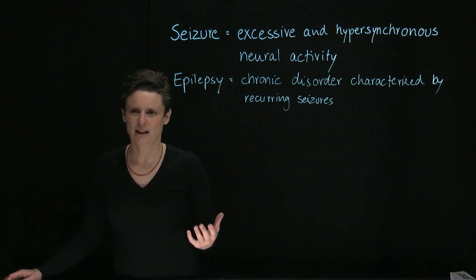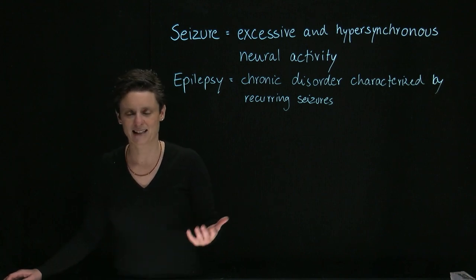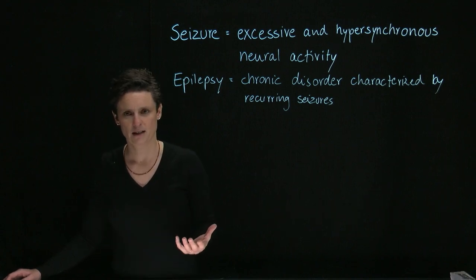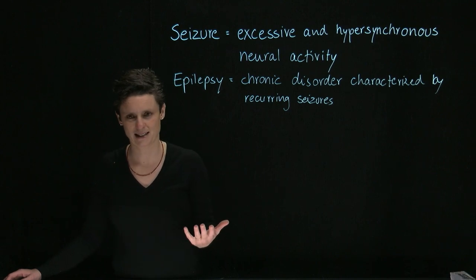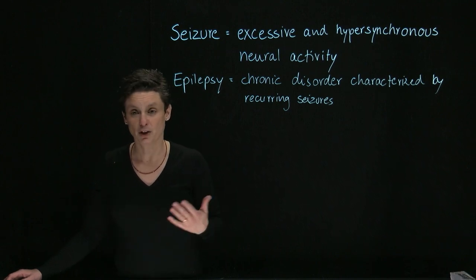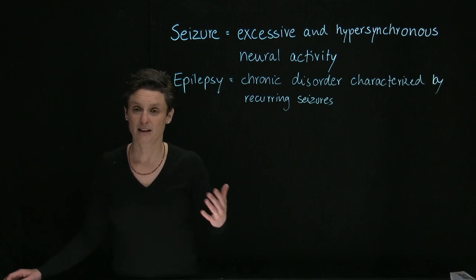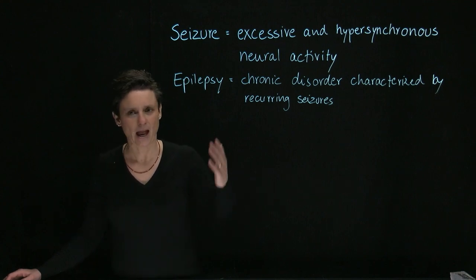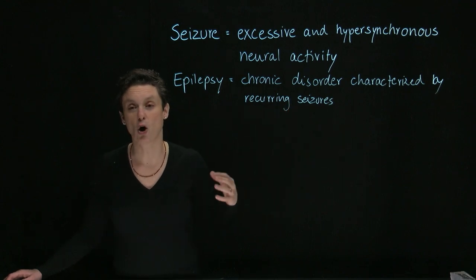Now, having a seizure can have a lot of different reasons. And if somebody presents with a seizure or had a seizure, you need to do a very thorough examination to figure out what the reason is. There could be a brain tumor, there could be meningitis, there could be electrolyte imbalances, things like hyponatremia or hypoglycemia. If you're not going to find a specific reason, well then the patient might have epilepsy in case the seizure would come again. So epilepsy is defined as a chronic disorder with recurring seizures without an obvious reason.